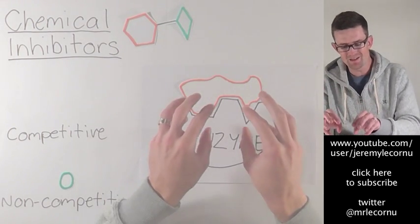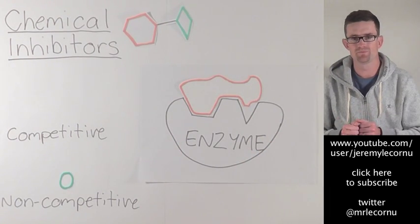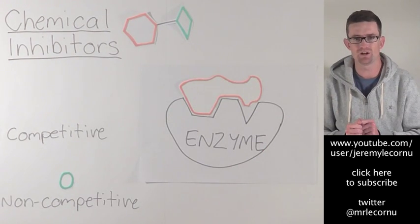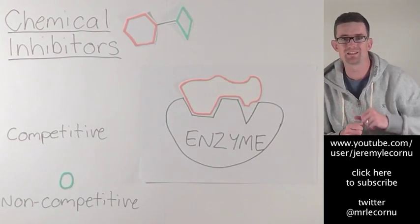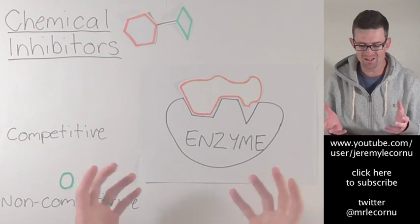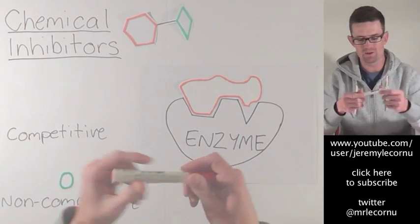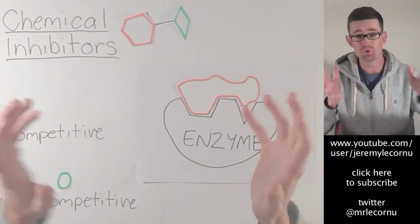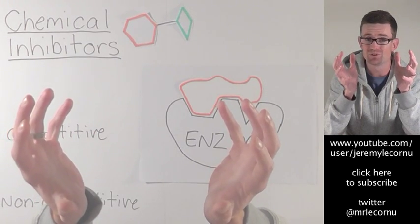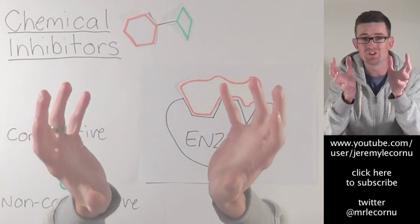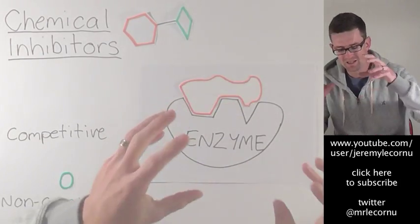Once that competitive inhibitor binds with that enzyme, the enzyme doesn't recognise it as the substrate. The enzyme can't facilitate the breakdown of that substrate because it is a different molecule, and the inhibitor actually remains bound to that enzyme and cannot be removed. You can imagine what that would be like if my hands were enzymes, and the process that they sped up was removing the lid from a texta. But if you super glued a bowling ball to my hands, I'm not going to be taking the lid off of any textas any time soon. The bowling ball is your chemical inhibitor, and that's exactly what's going on here. Your competitive inhibitor has blocked the enzyme.